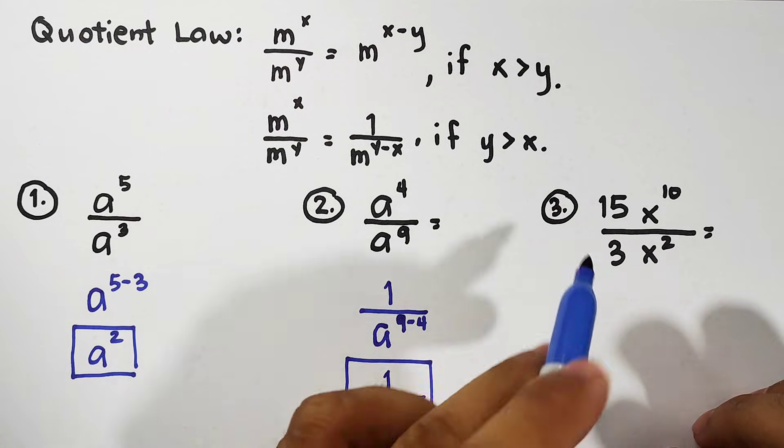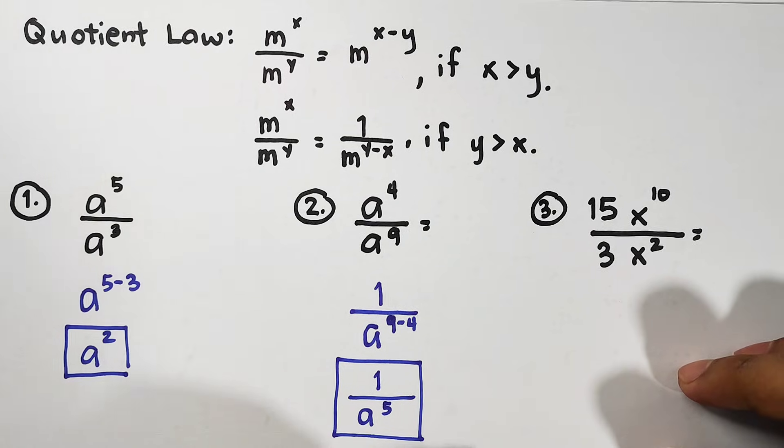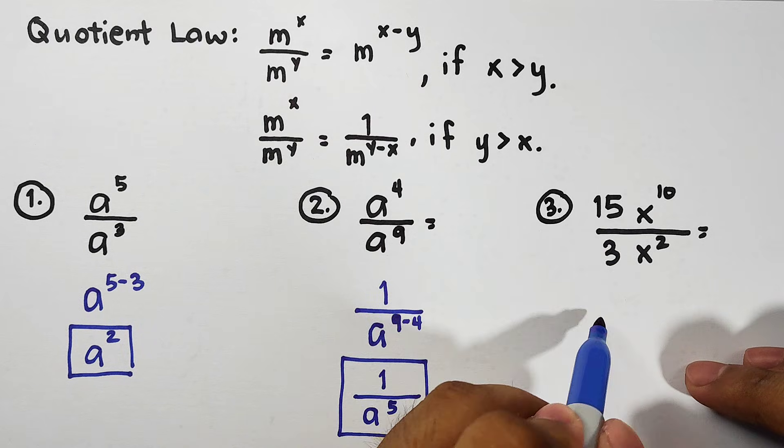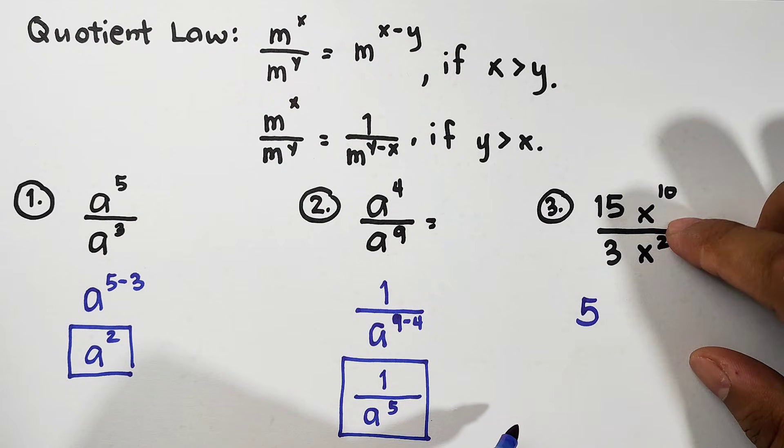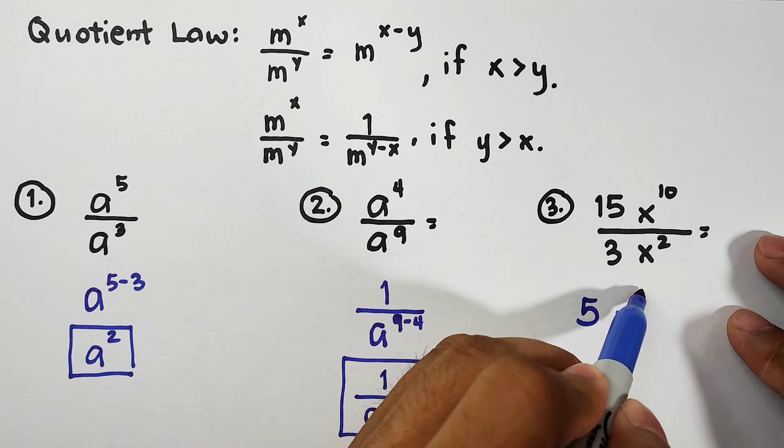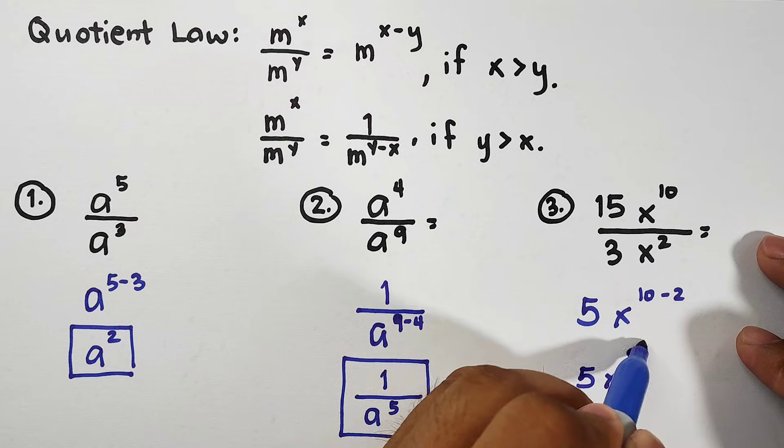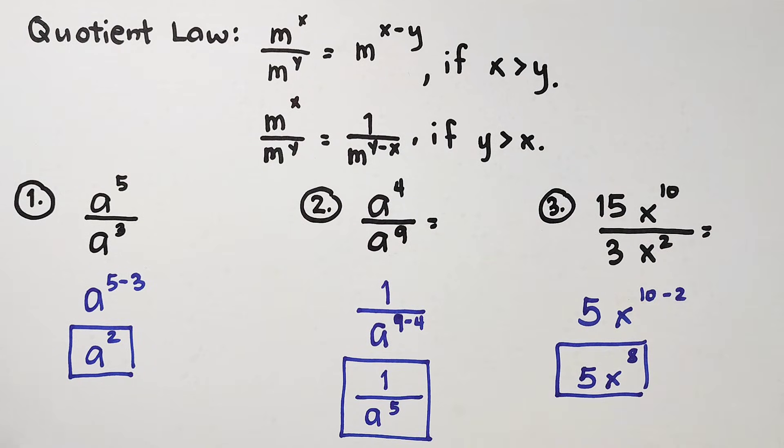Now, let's move on with number 3. For number 3, we have coefficients, but this one is not that difficult. Let's divide first the numbers. 15 over 3 or 15 divided by 3 is simply 5. For the variable x, since the exponent of the numerator is greater than the exponent of the denominator, copy the variable x and you have 10 minus 2. Simplify, you have 5x raised to the 8th power. So, if you're familiar with these laws, you can answer them mentally. Promise.